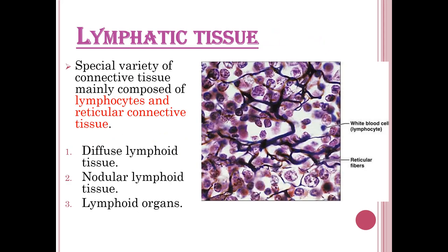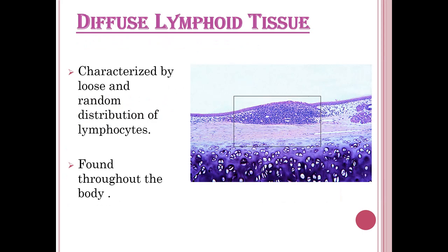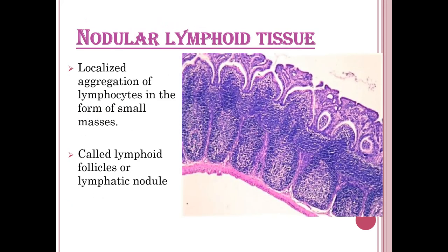Lymphatic tissues are a special variety of connective tissue mainly composed of lymphocytes and reticular connective tissue. They are classified into diffuse lymphoid tissue, nodular lymphoid tissue, and lymphoid organs. Diffuse lymphoid tissue is characterized by a loose and random distribution of lymphocytes found throughout the body. Nodular lymphoid tissue consists of localized aggregations of lymphocytes in the form of small masses called lymphoid follicles or lymphatic nodules.